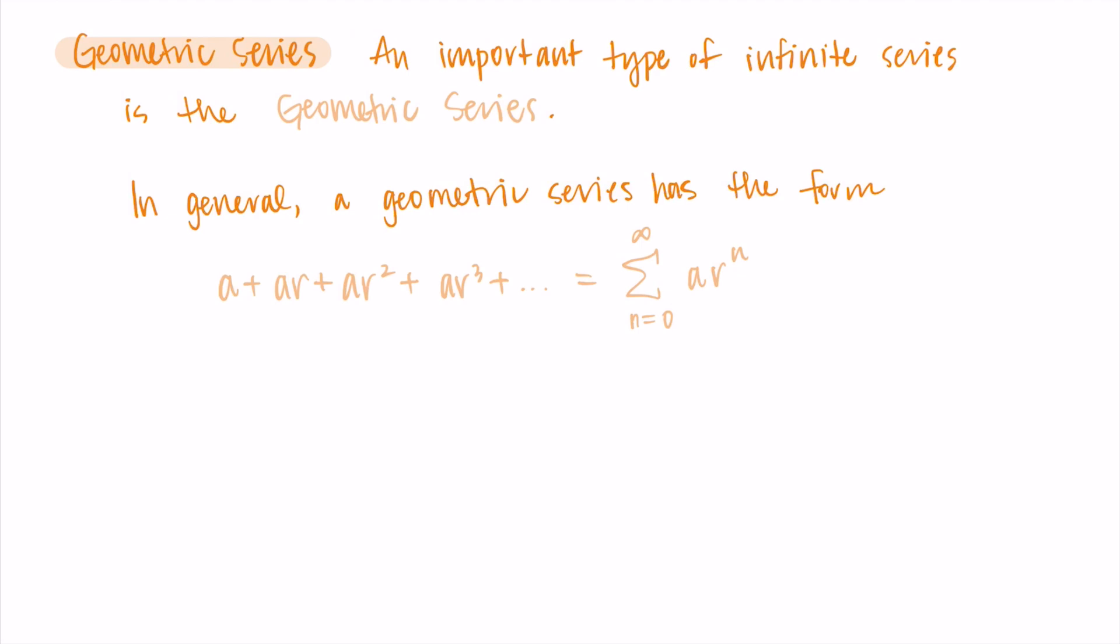So notice we're starting this summation at 0. We often start it at 1, but we want to get that first term which is just a, so we're starting it at 0. So the first term ar^0 is just a, then the second term is ar^1, that's our ar, and our third term would be ar^2, etc.